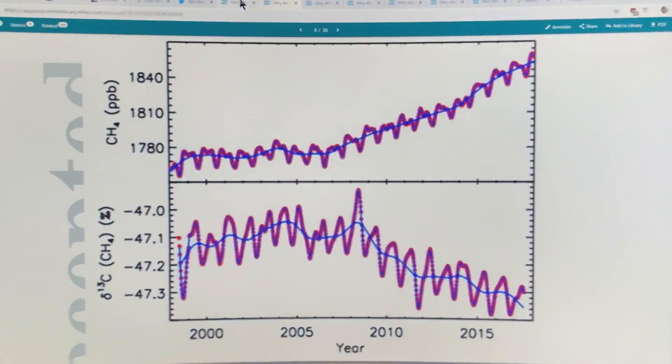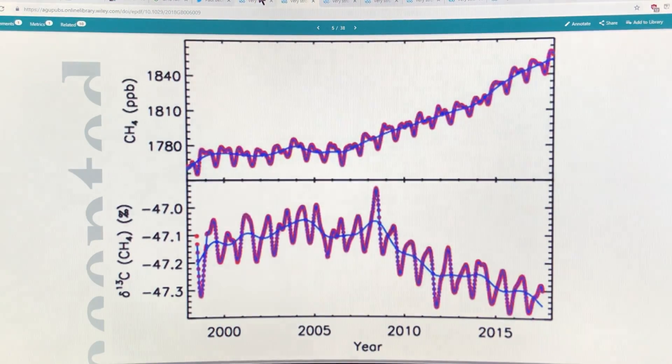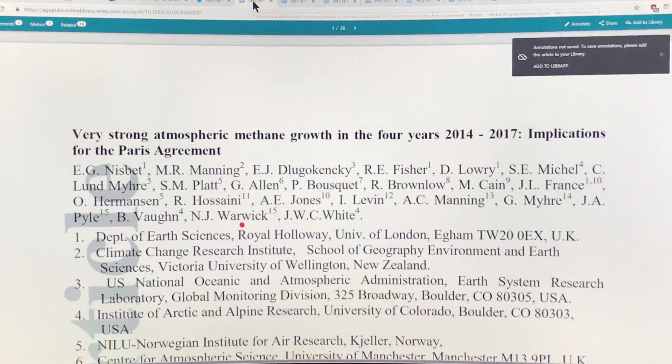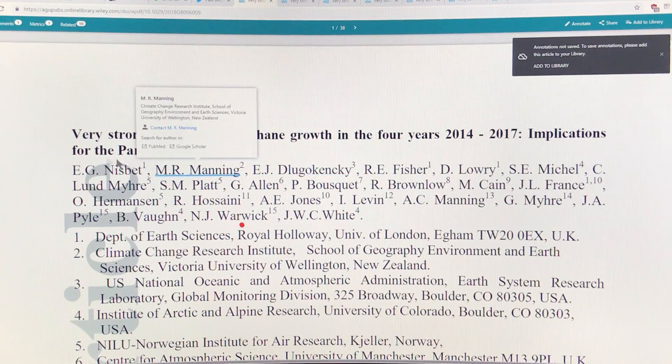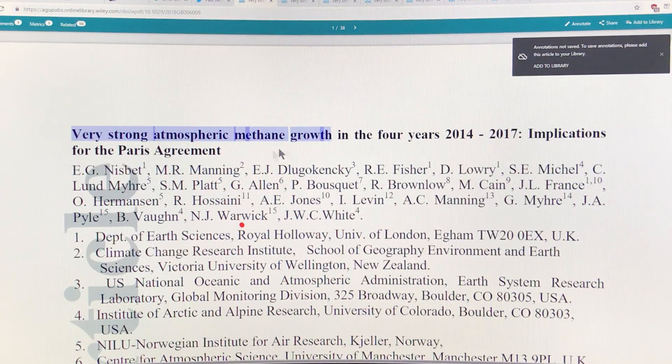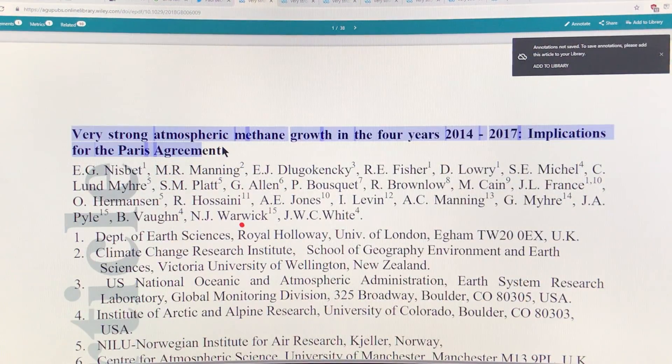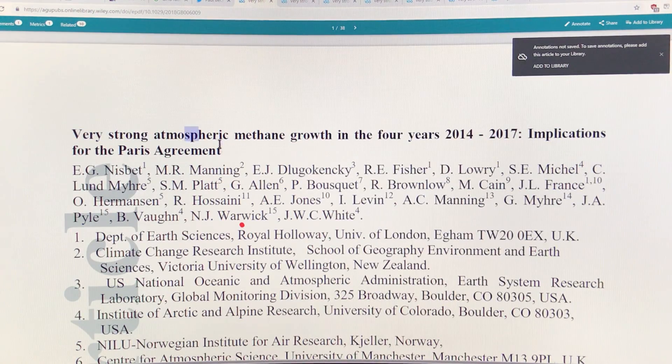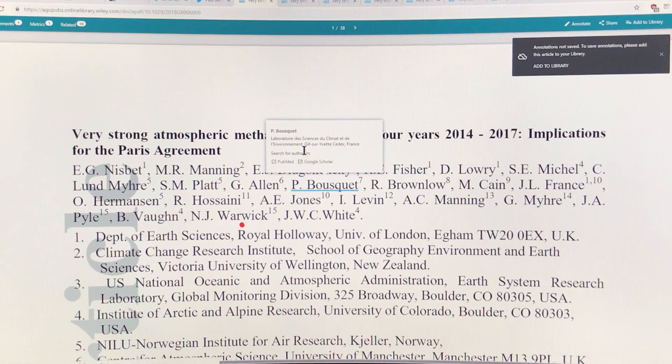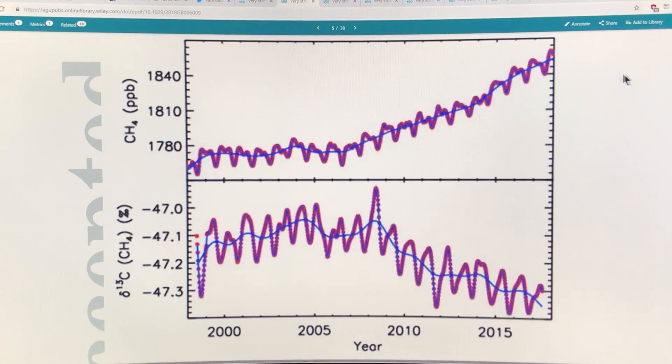This paper is open source, very strong atmospheric methane growth in the four years 2014 to 2017, implications for the Paris agreement. It's a 38-page paper and I'll talk about the highlights or lowlights if you like of the paper.